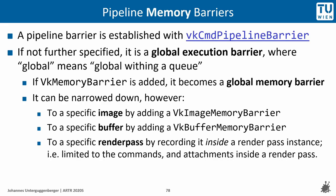Pipeline barriers are established with vkCmdPipelineBarrier. If no access masks are specified, it acts as an execution barrier. If a VkMemoryBarrier element is added, it acts as a global memory barrier. Access can be narrowed down to specific resources: to images using VkImageMemoryBarrier, to buffers using VkBufferMemoryBarrier, or to render passes by recording the barrier inside a render pass instance, in which case the barrier refers only to the commands and attachments inside that render pass.